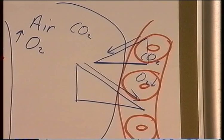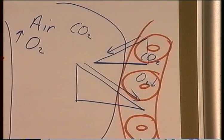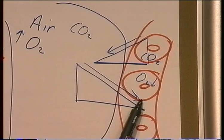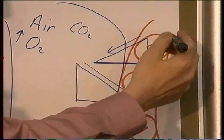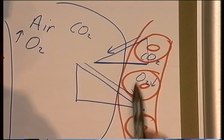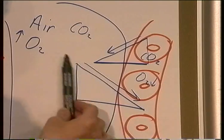If this carried on for some time, we would end up with the same amount of CO2 on both sides and the same amount of oxygen on both sides. But of course the blood moves on — the oxygen-rich blood moves away, and blood low in O2 comes back again, so the diffusion gradient is replenished and the process carries on.